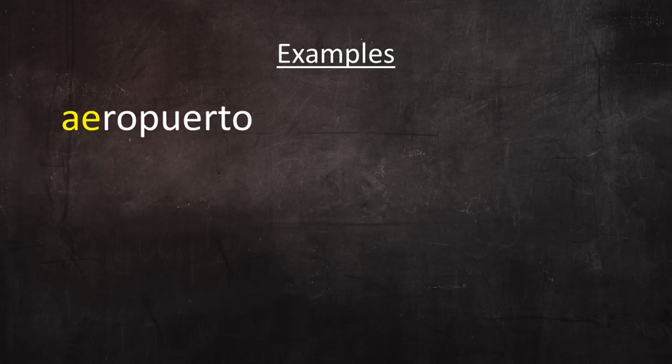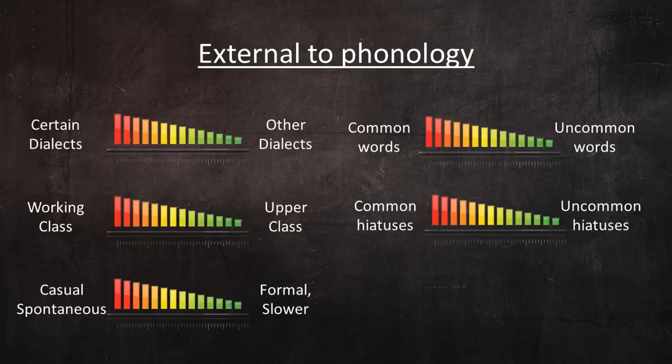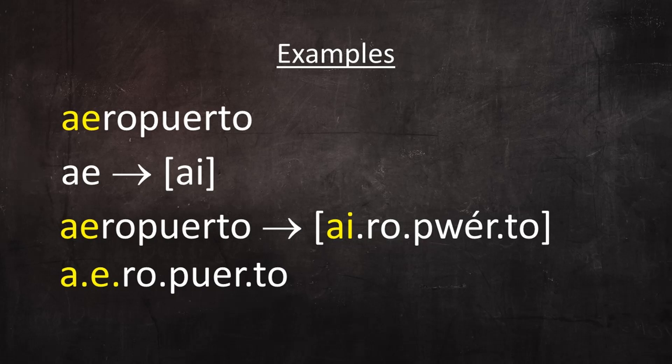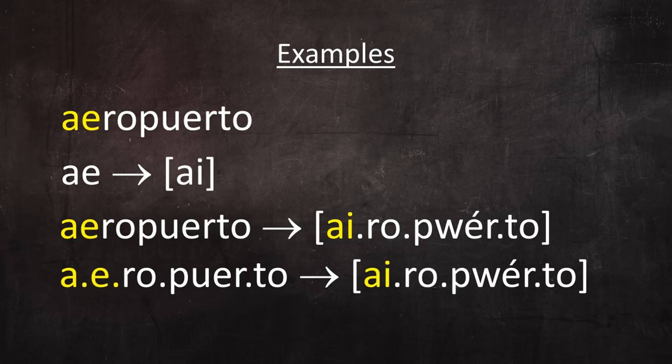The word aeropuerto contains the hiatus A-E, which could resolve to AI. So, depending on all the factors mentioned earlier, aeropuerto may resolve to airopuerto. Observe that in the resolved version, the word is one syllable shorter. Aeropuerto → airopuerto.